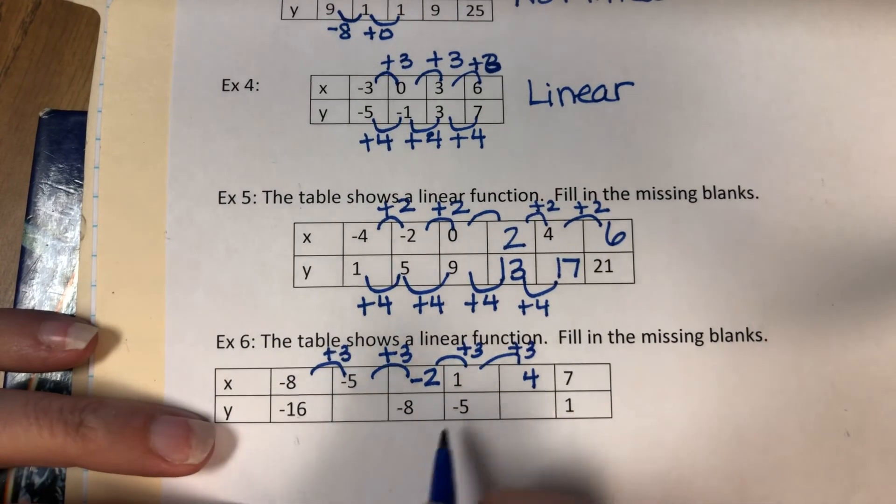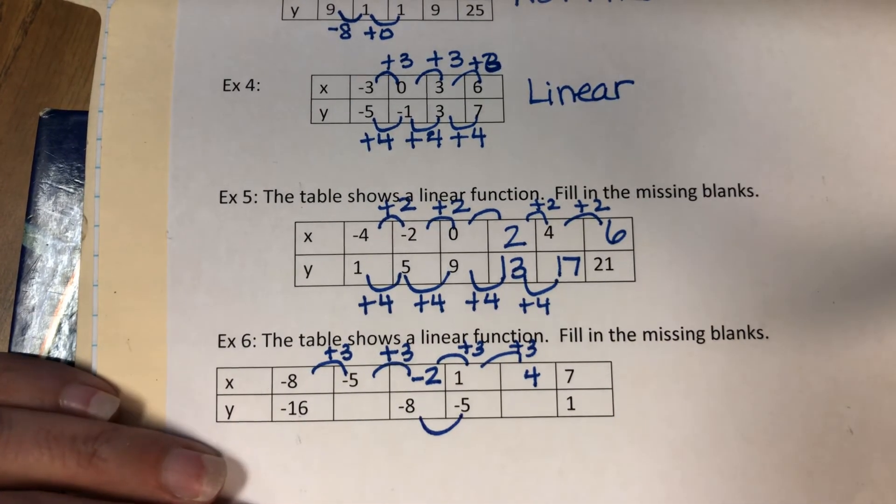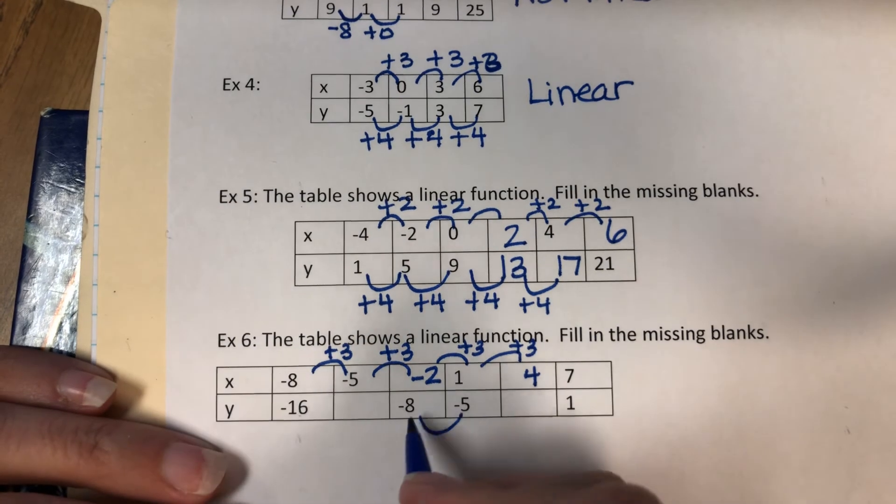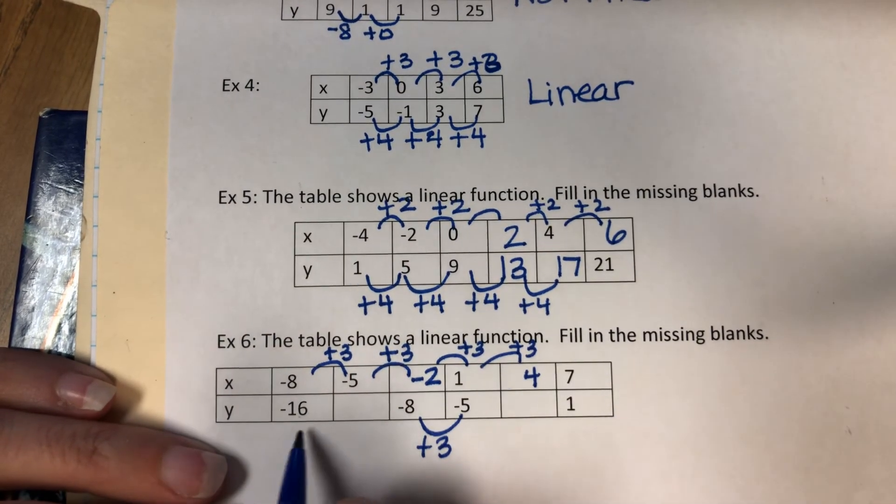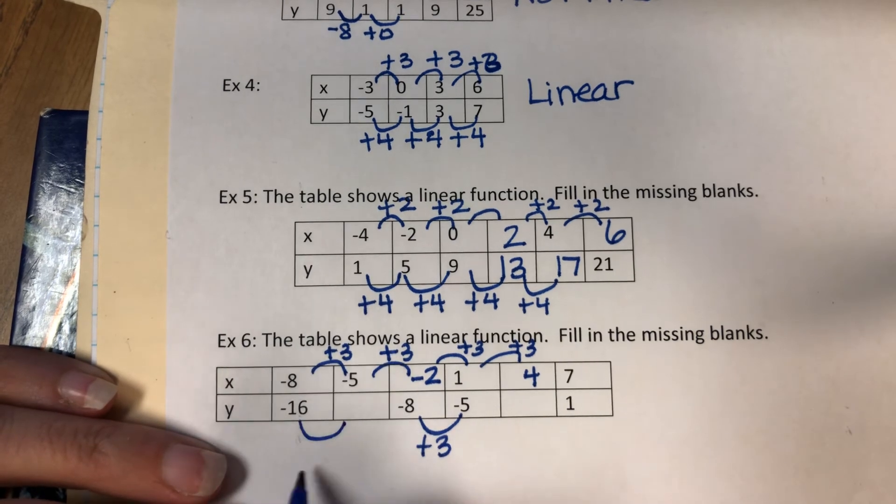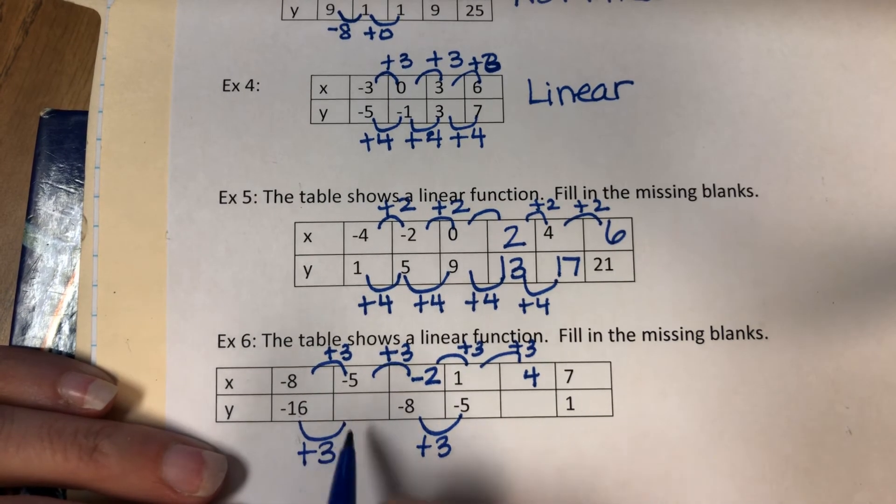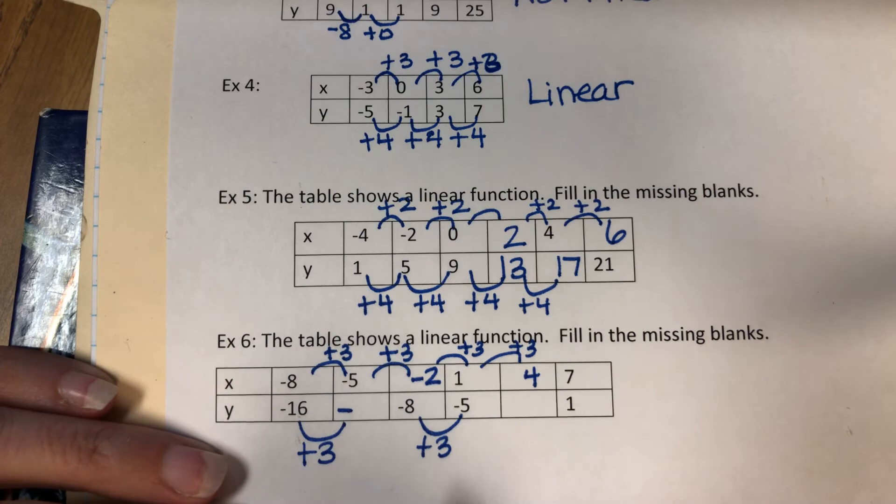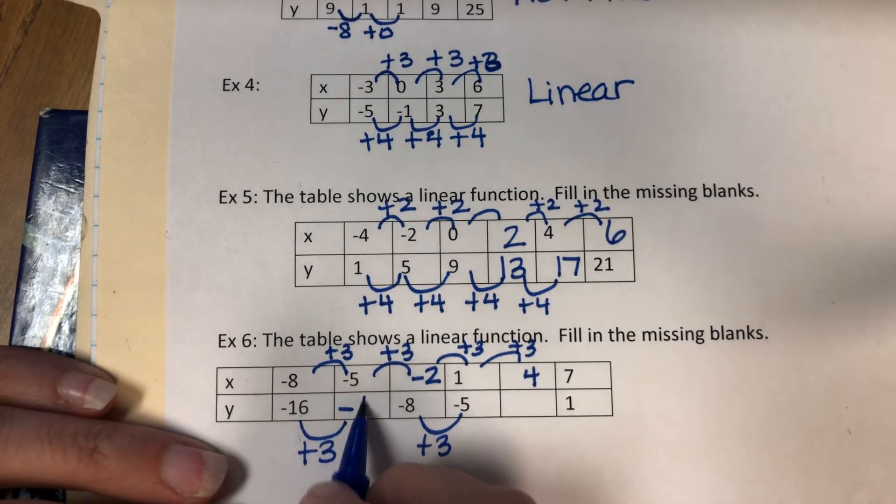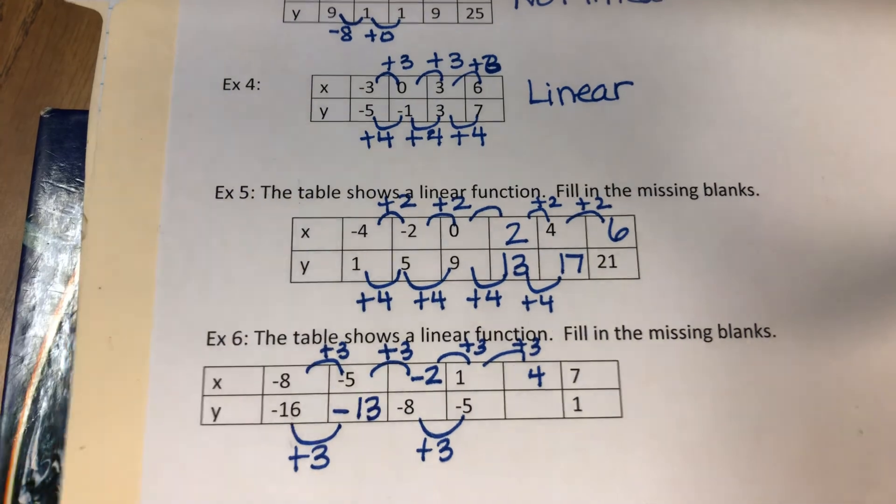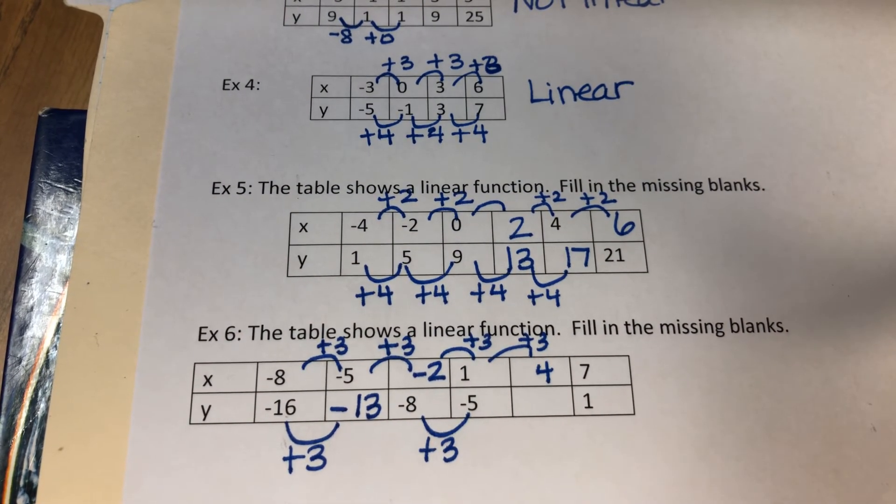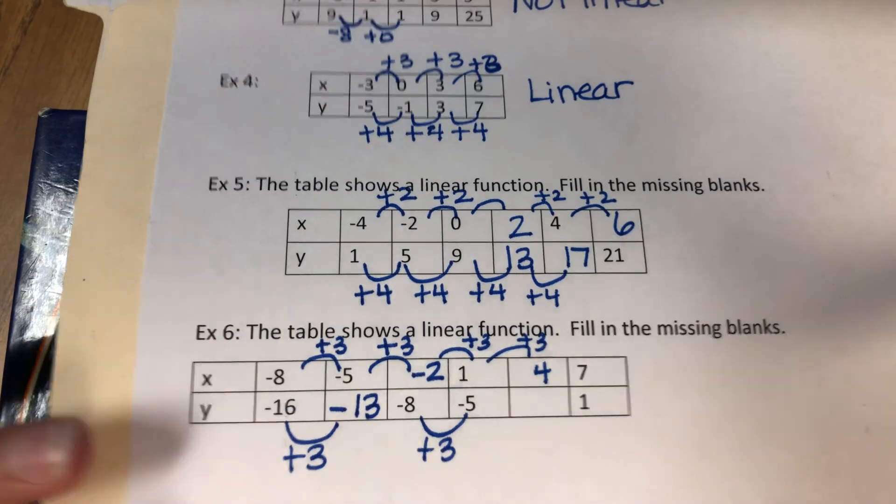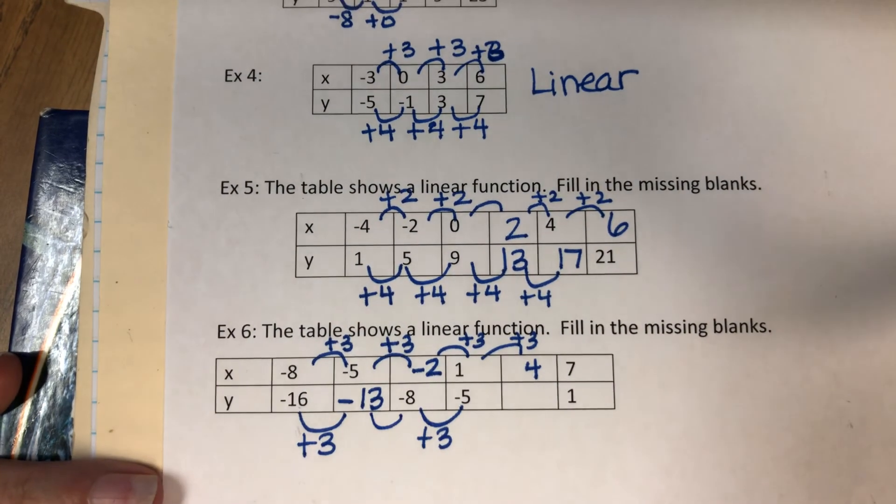Now down here in the y's, I have to look here from negative 8 to negative 5. From negative 8 to negative 5, I add 3. So now I've got to go back here to the negative 16. So negative 16 plus 3 is negative 13. Sorry, there's a mistake here. Because that's not actually...